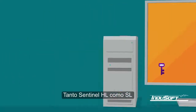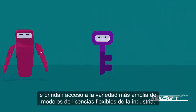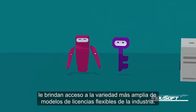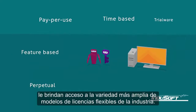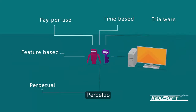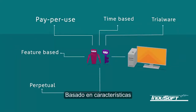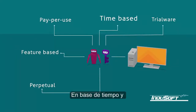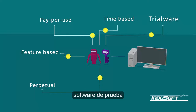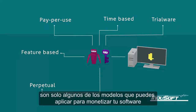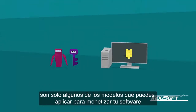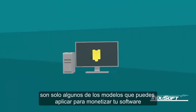Both Sentinel HL and SL give you access to the industry's widest variety of flexible license models. Perpetual, feature-based, pay-per-use, time-based, and trialware are just some of the models that you can apply to monetize your software.